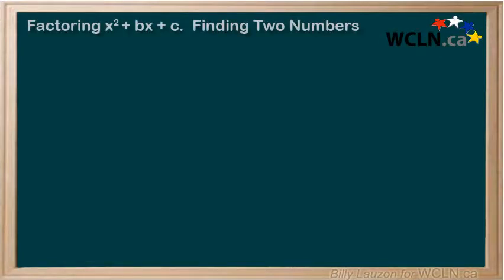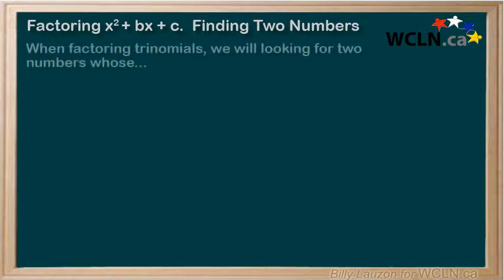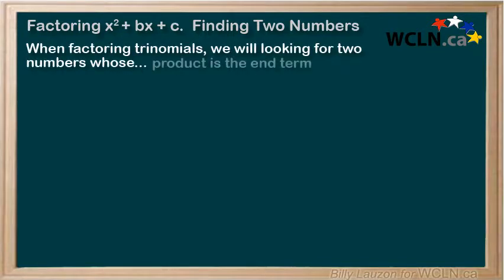We're going to be taking a look at factoring trinomials. When factoring trinomials, we'll be looking for two numbers whose product is the end term, C, and sum is the middle term, B.